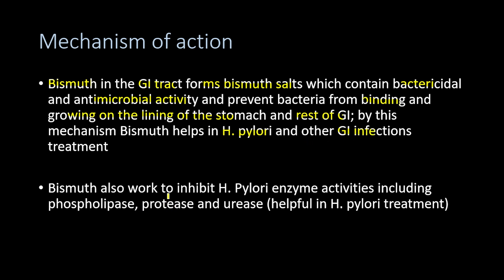Bismuth also works to inhibit H. pylori enzyme activities, including phospholipase, protease, and urease secreted by H. pylori. So bismuth has antimicrobial and bactericidal properties and also inhibits these key H. pylori enzymes.